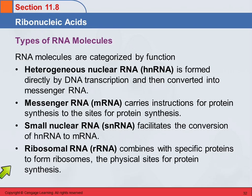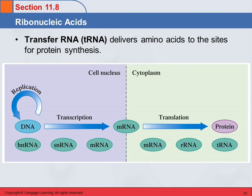Then there's ribosomal RNA, rRNA, which combines with specific proteins to form ribosomes. Ribosomes are the actual physical sites where proteins are made. And then there is transfer RNA, which actually brings in the amino acids to the sites for protein synthesis.